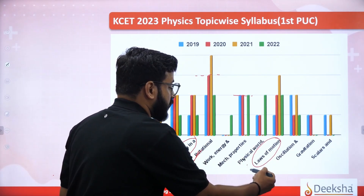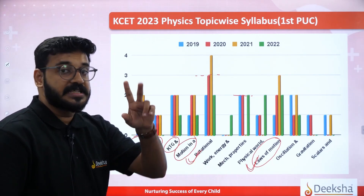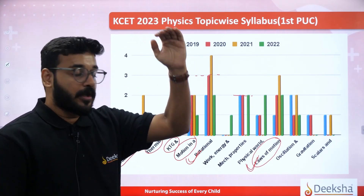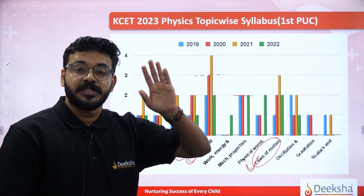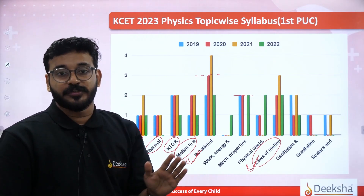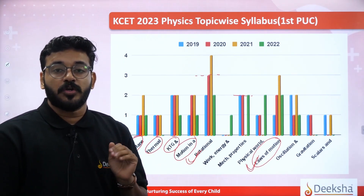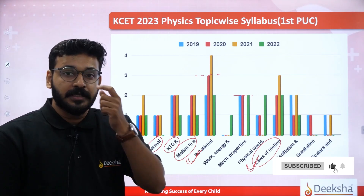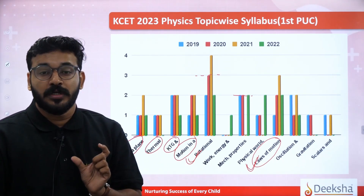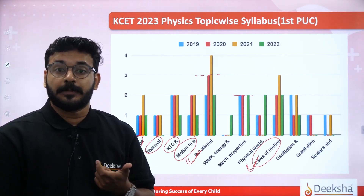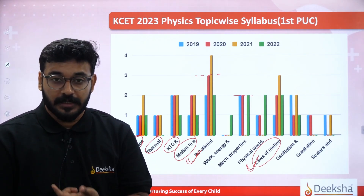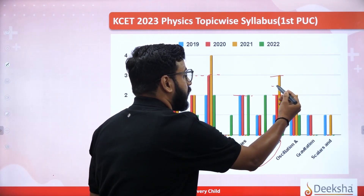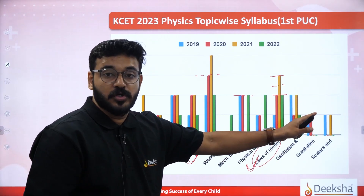In the first PUC, if you want to know the worst error chapter — maximum priority is rotational motion. Laws of motion is also very important. There is confusion among students about laws of motion. Laws of motion — every year, two to three questions on average come from this chapter. Please look into that.